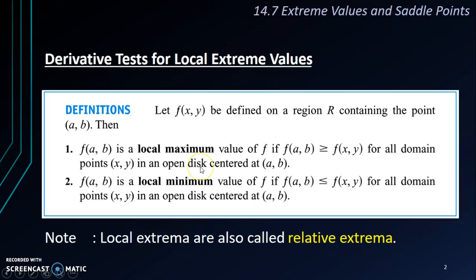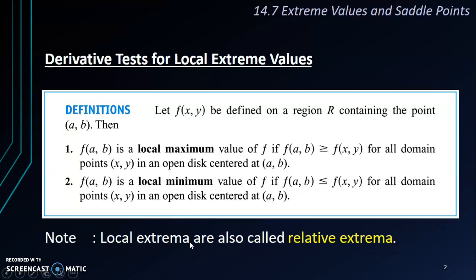What are the differences between these terms? All those ending with 'a' — maxima, minima, extrema — they are plural. The ones ending with maximum, minimum, extremum, these are all singular. That's the difference.